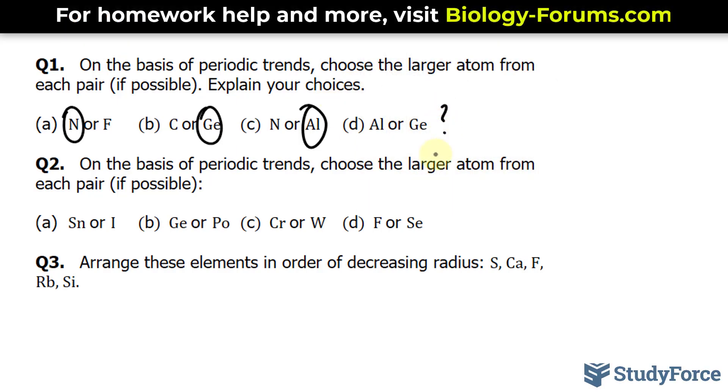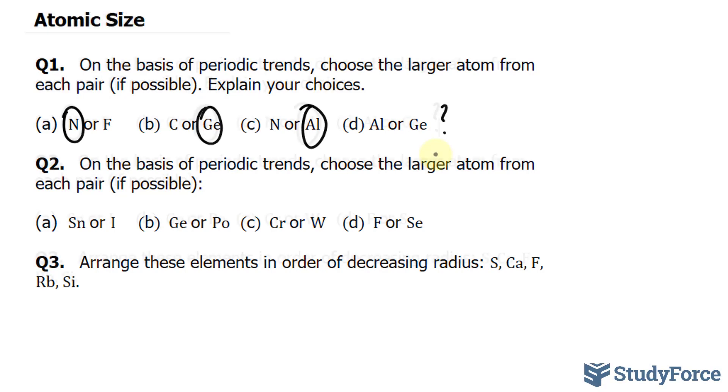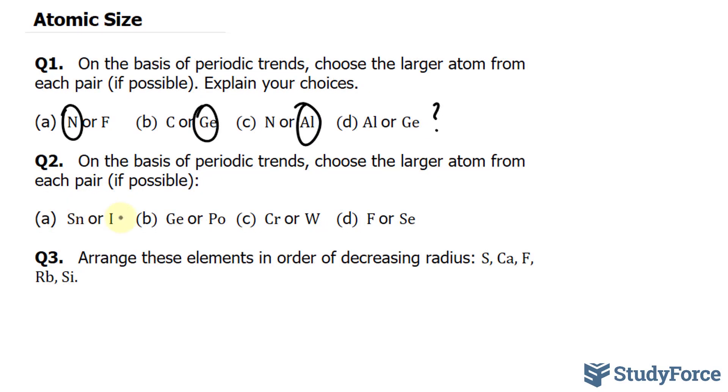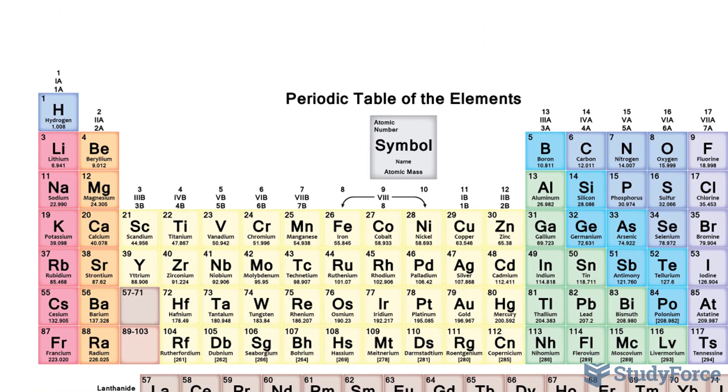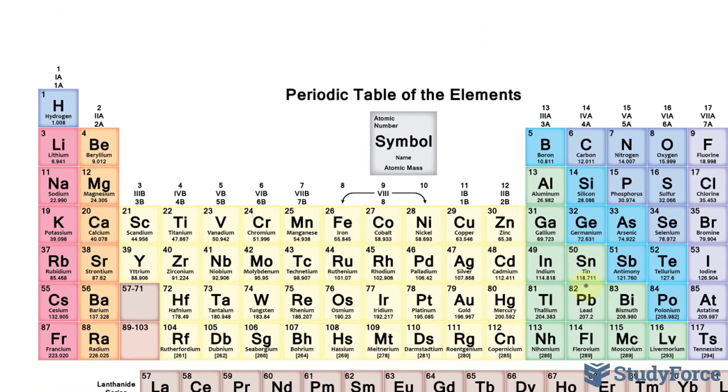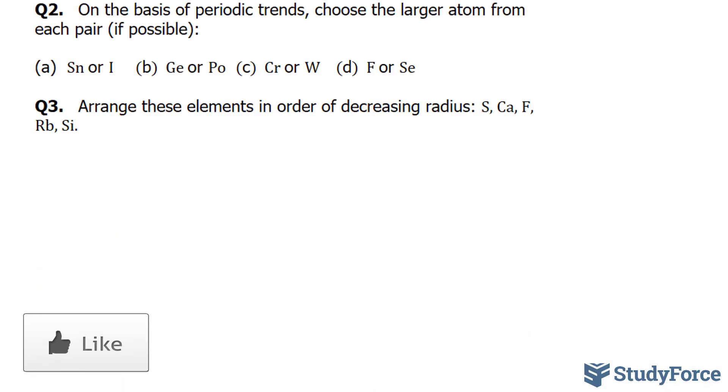Let's move on to question 2. On the basis of periodic trends, choose the larger atom from each pair. So we're doing the exact same thing. This time we're comparing tin with iodine. Taking a look at the periodic table underneath, tin is found right here, and iodine is found right here. For the exact same reason as to why nitrogen was larger than fluorine, tin is larger than iodine because as you move to the right across a row, the nucleus gets larger, so those outer electrons are attracted more towards the inside. So tin wins that battle.